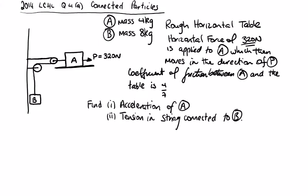2014 Leaving Cert Higher Level Question for Connected Particles. We were given this diagram on the left. We have one string connected to B, two strings connected to A. We're told that the mass of A is 4 and the mass of B is 8.